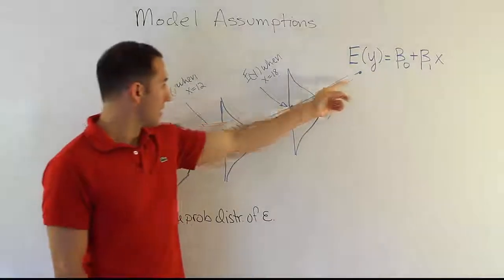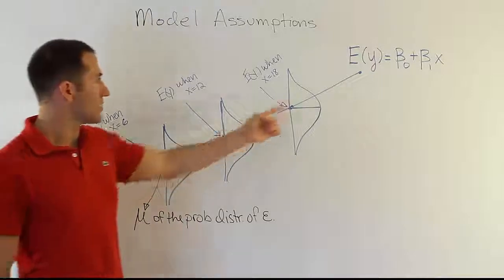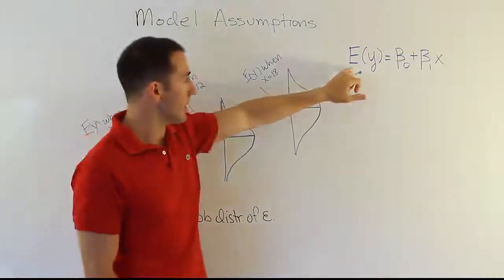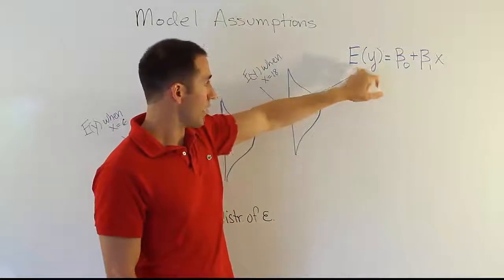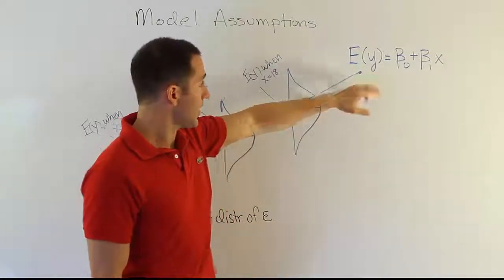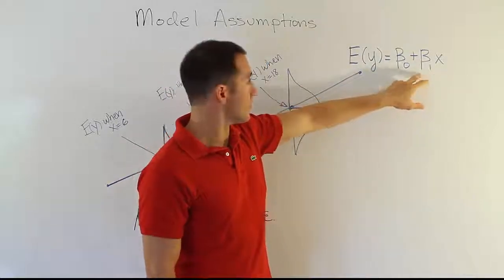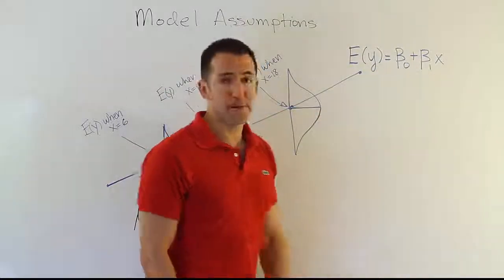First of all, the line here that's being represented is actually the model that we're dealing with. It's the regression model in abstract form. This is the expected value of y or the average value of y. Then of course you have the standard formula for the equation. The y intercept and the slope beta naught beta one.